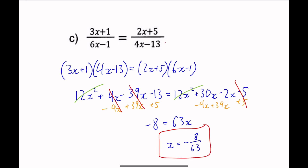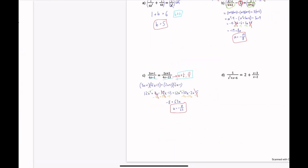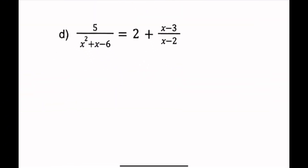Also, x cannot be 1 over 6 or 13 over 4 — those are our restrictions since they appear in the denominator. Lastly, number d: 5 over x squared plus x minus 6 equals 2 plus x minus 3 over x minus 2. First, factor the denominator: x squared plus x minus 6 factors into (x+3)(x-2).